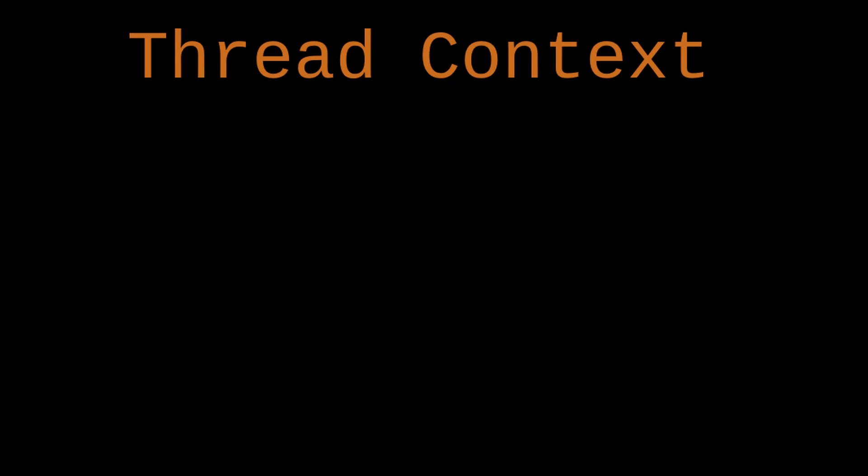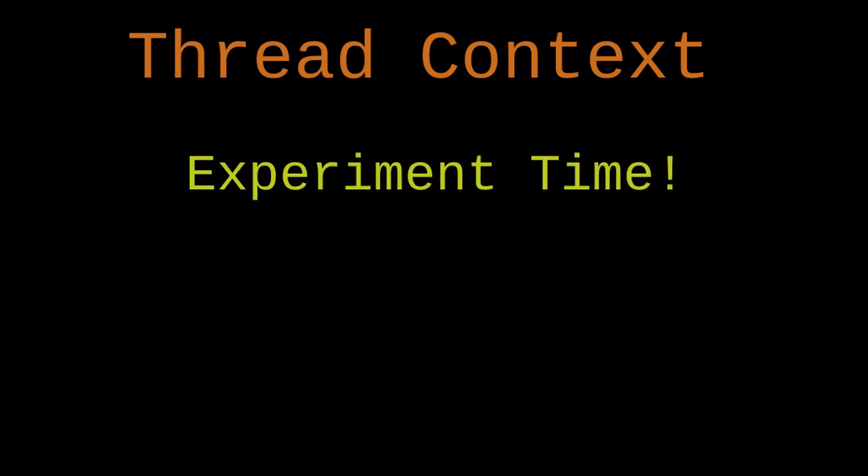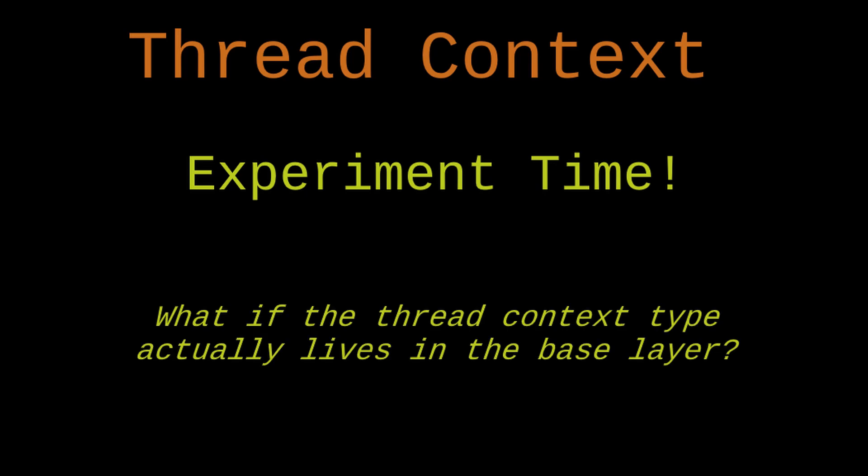I have one final note before we get started coding. So far in this project, I haven't done a lot of experimentation — I've mostly stuck to ways of organizing and implementing things that I've already tried before and I'm happy with. But for this thread context, I am going to tweak it a little bit. Usually I consider the thread context just a part of the operating system layer, but I was thinking it might be interesting to see if it works out better when a lot of the thread context logic actually lives in the base layer, and the operating system layer will be relegated to just providing the thread local storage aspect. And it won't know anything else about the thread context type. I don't know how this will turn out, but I want to give it a shot and see if I like it better this way.